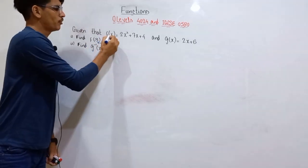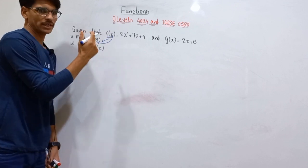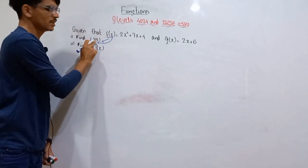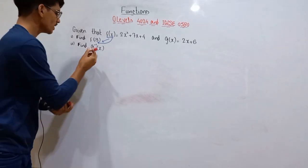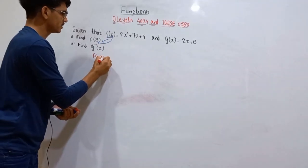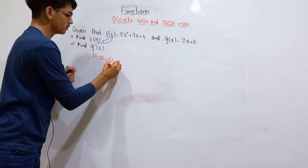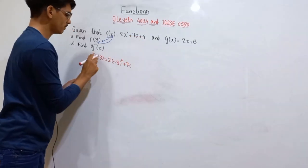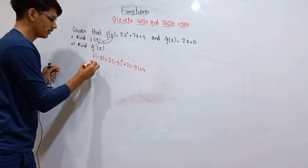f(x) = 2x² + 7x + 4, and for f(-3) you just have to replace x by -3. So f(-3) = 2(-3)² + 7(-3) + 4. We are going to replace every x with -3 and find out the value of f(-3).